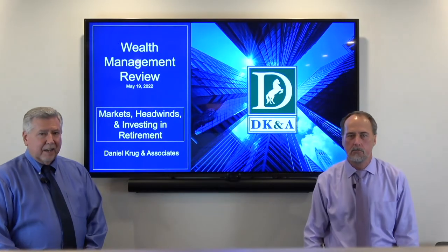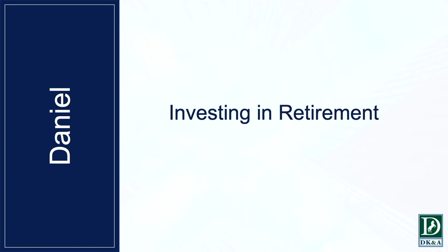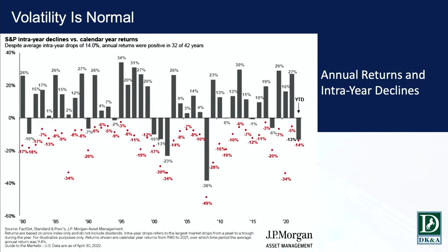Alright, investment in retirement. We talked about the economy and the markets — volatility is normal. This chart shows the S&P 500 intra-year declines versus the calendar year return. The red numbers below zero show how far the market went down in any given year, and the gray bars above zero show where the market actually ended up.